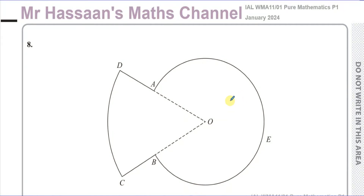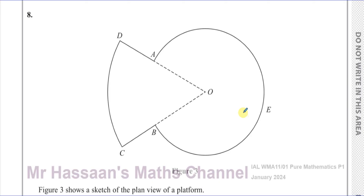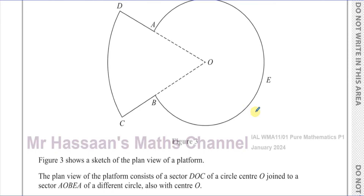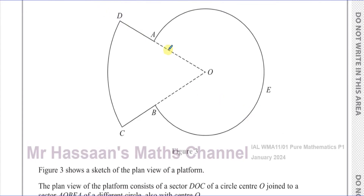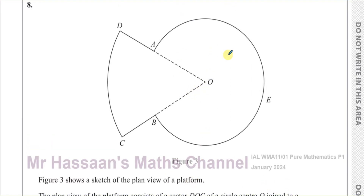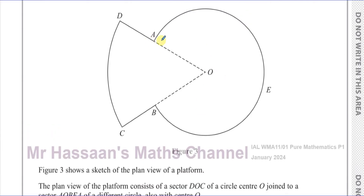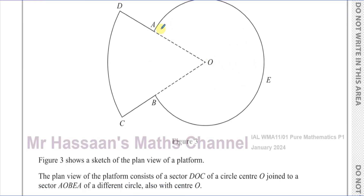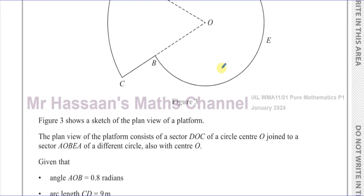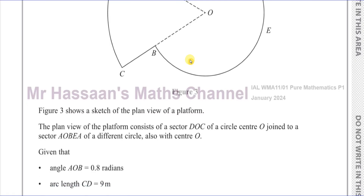Welcome back, this is Mr Hassan's Maths channel. I'm answering question number eight from the January 2024 Pure Mathematics P1 International A-level Edexcel exam. This question is about radian measure, and we're given a diagram — a sketch of the plan view from above of a platform. The plan view consists of a sector DOC, which is part of a larger circle with centre O, joined to a major sector AOB of a smaller circle, also with centre O.